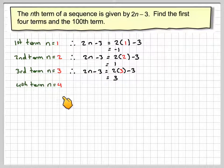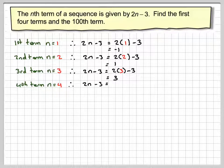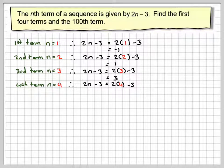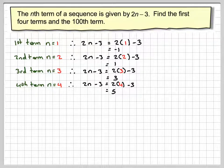And then the fourth term is n is equal to 4, which is 2n minus 3. Again, it will be equal to 2 times 4 minus 3. That's going to be 8 take away 3, which is 5.